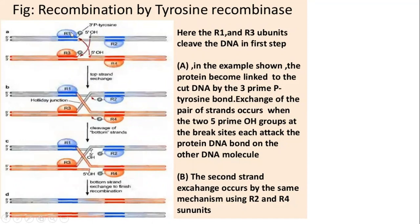Here you have a nick with a free 3'-OH group, to which the recombinase comes and binds. Four recombinases are required. The strands are exchanged — this strand makes a bond here, and this strand makes a bond over there. The phosphodiester bond between the enzyme and the DNA strand breaks, the strands are rejoined using the stored energy, and eventually all the enzymes are released.